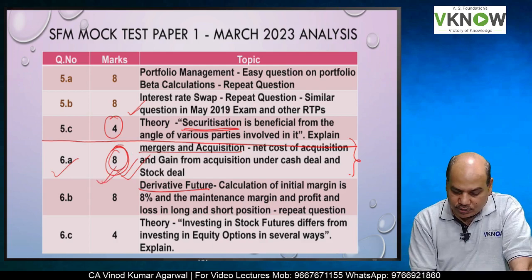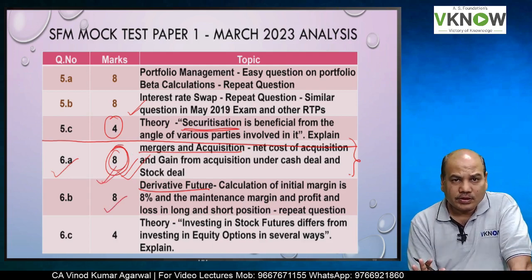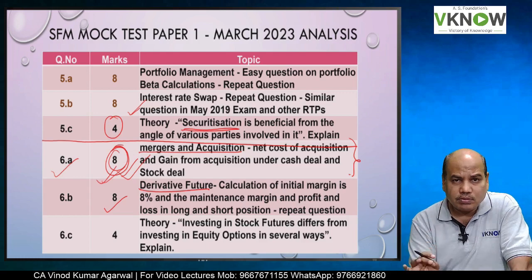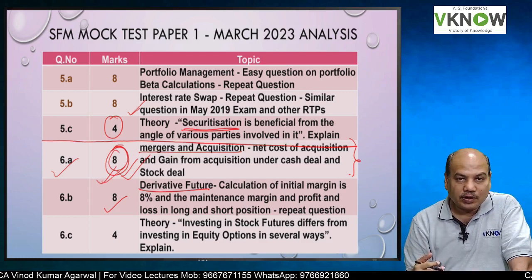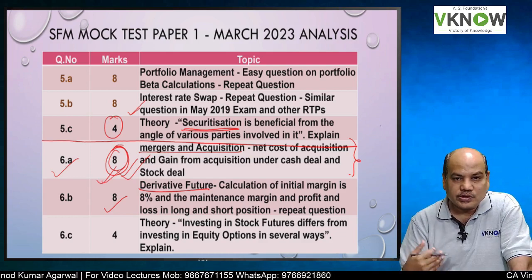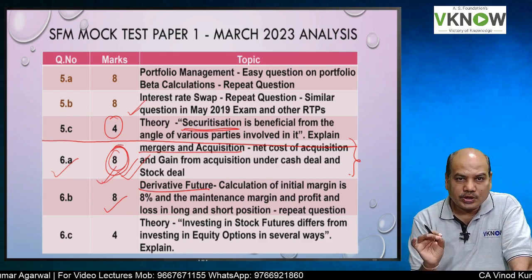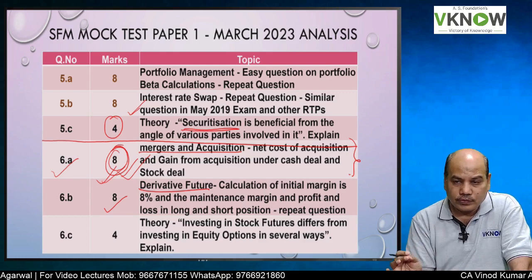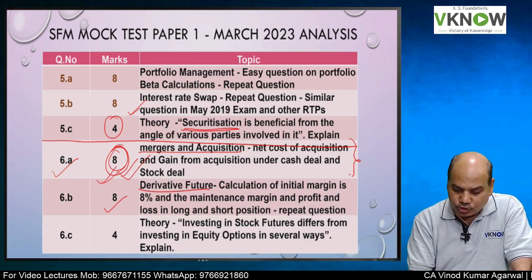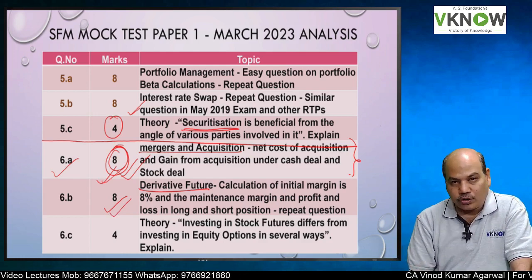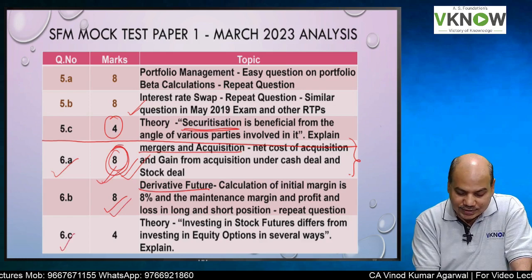Question 6B is again a highly repeated question on the calculation of initial margin and maintenance margin. They give you different price levels, you determine whether margin money will be brought in, and then find out the profit or loss of the long position holder and short position holder. You will say we have already done several such questions in class — and yes, you are right.